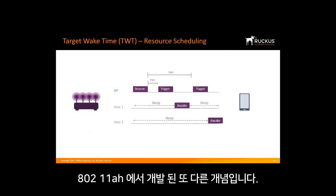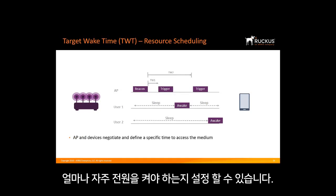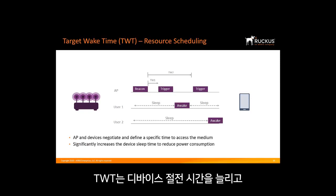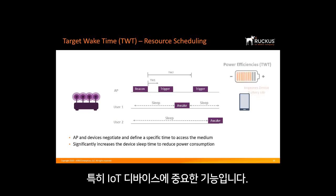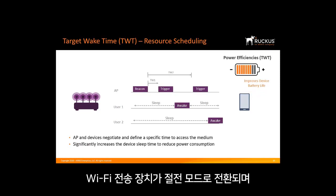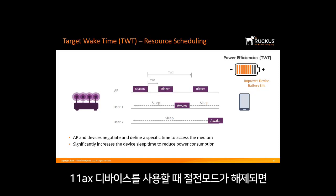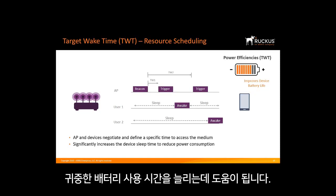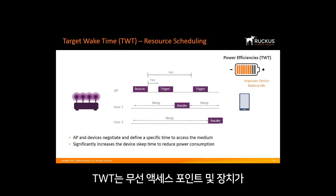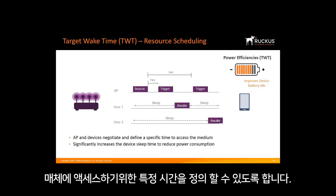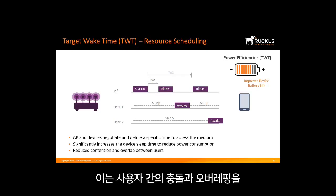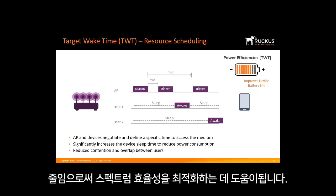Target Wake Time, or TWT, is another concept developed in 802.11ah. It allows devices to negotiate when and how often they will wake up to send or receive data. TWT increases device sleep time and substantially improves battery life — a feature particularly important for IoT devices. This allows the Wi-Fi transponder to sleep when transmission isn't necessary. In addition to saving power on the client side, TWT enables wireless access points and devices to negotiate and define specific times to access the medium, helping optimize spectral efficiency by reducing contention and overlap between users.